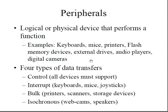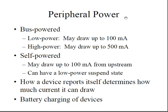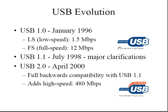Peripherals are the logical or physical devices that perform functions such as keyboards, mice, printers, and flash memory. There are four types of data transfers: control, interrupt, bulk, and isochronous, depending on the type of data being transferred. Regarding peripheral power, the device itself determines how much current it can draw, and battery charging of devices is also supported.